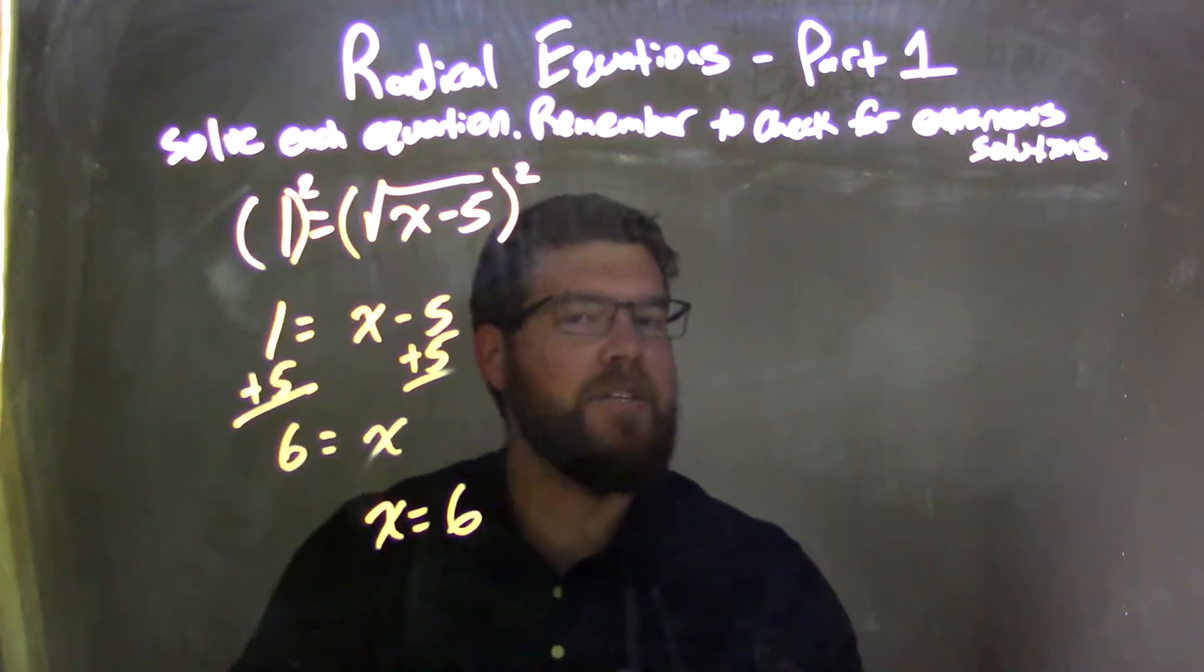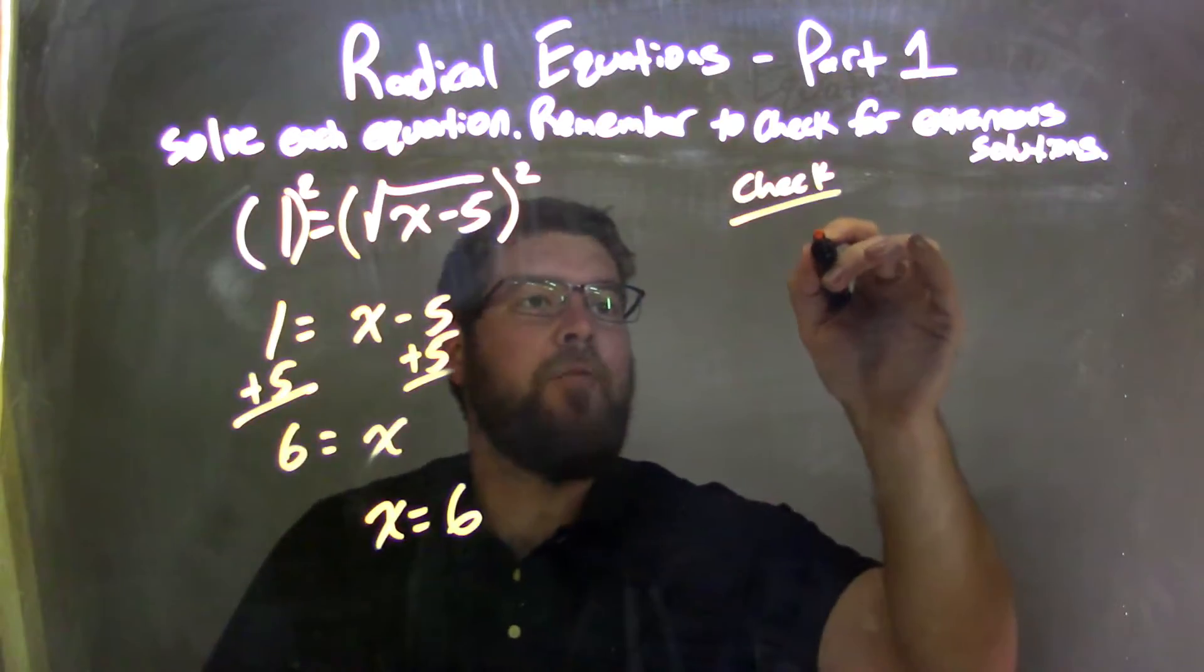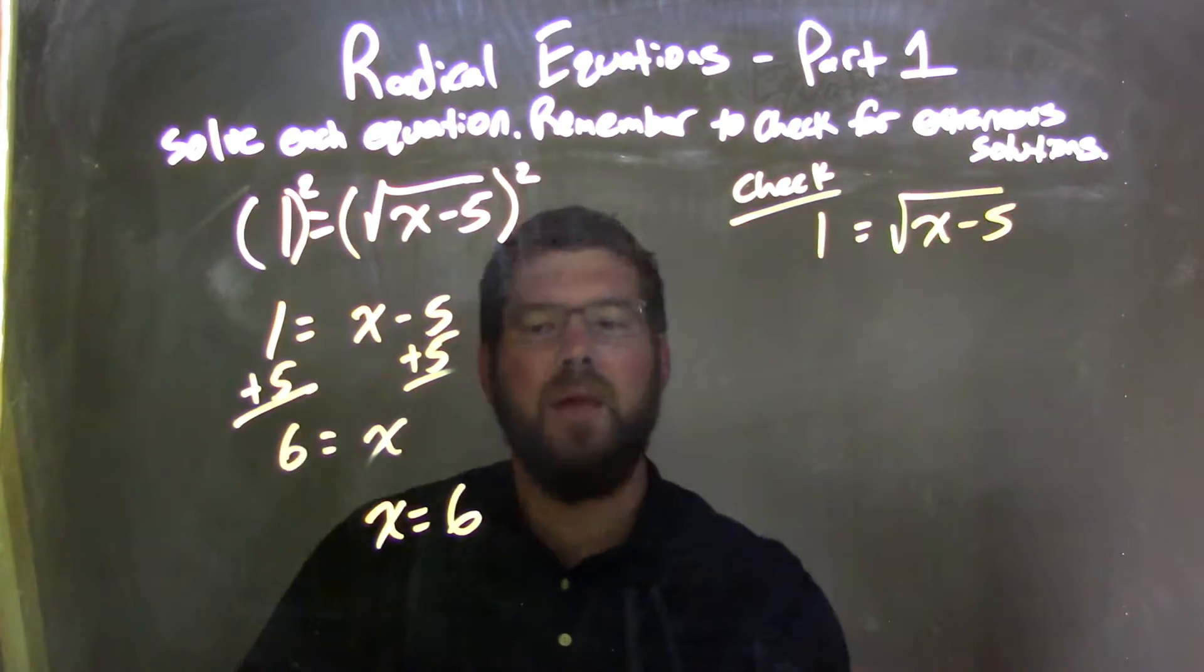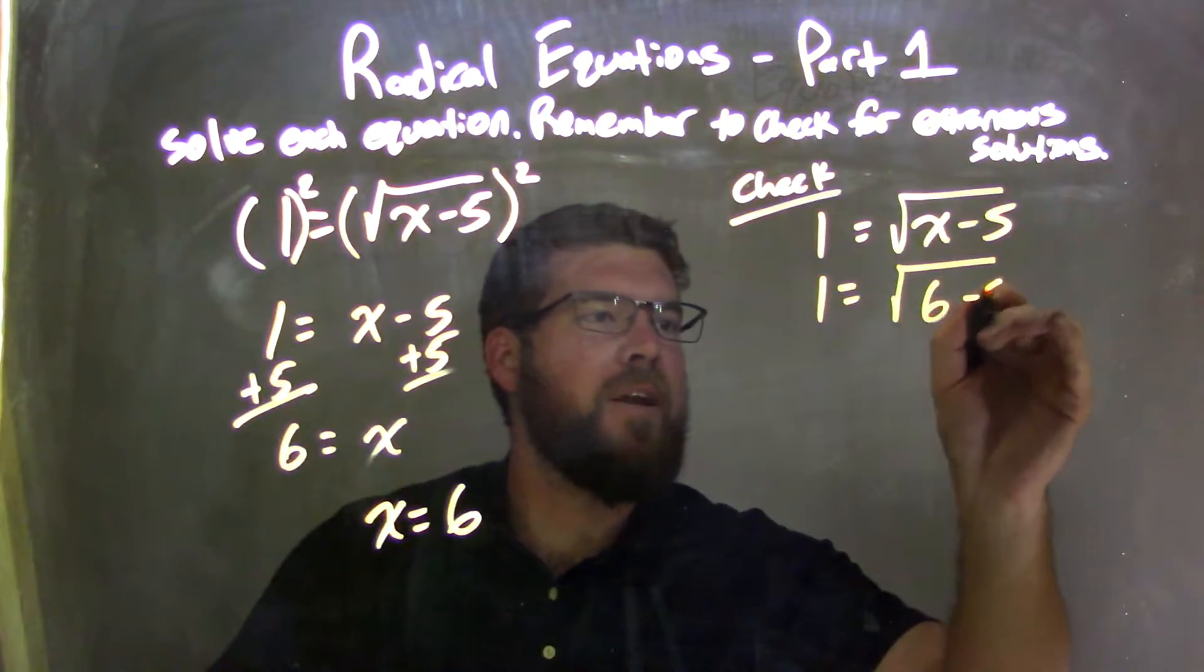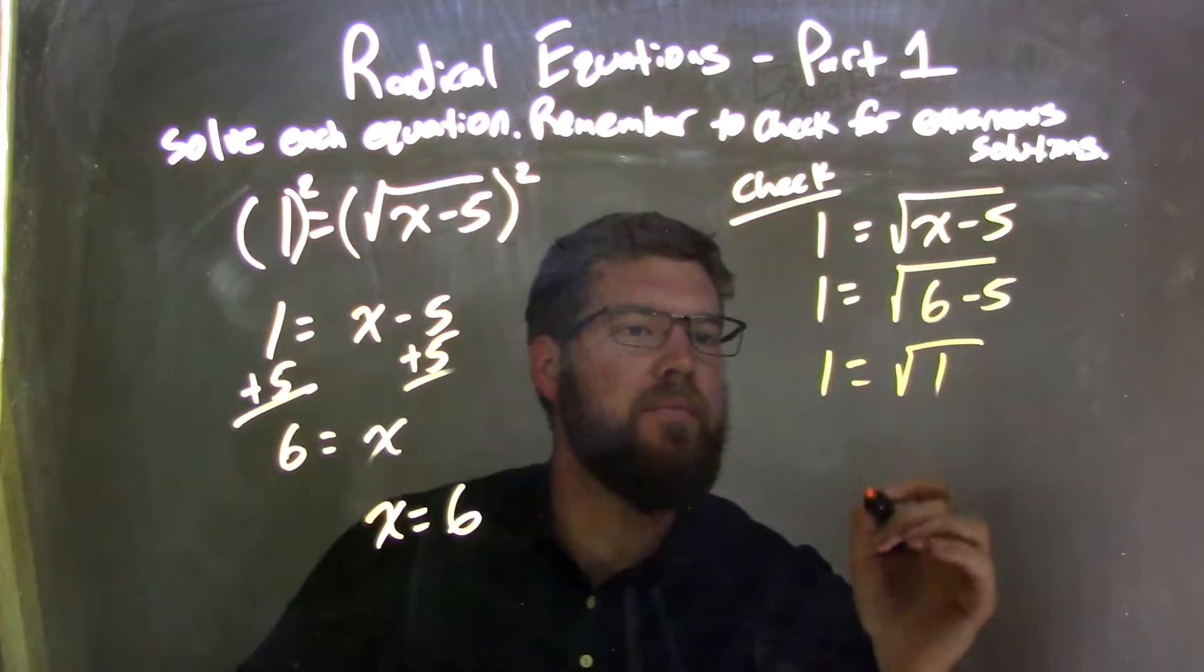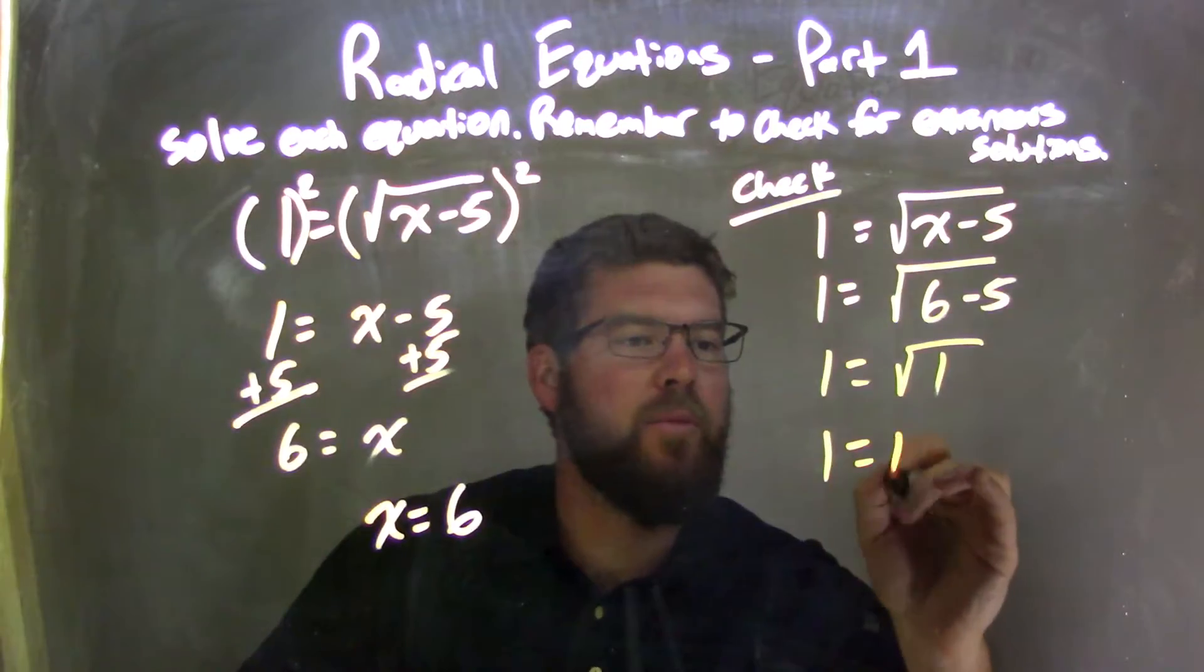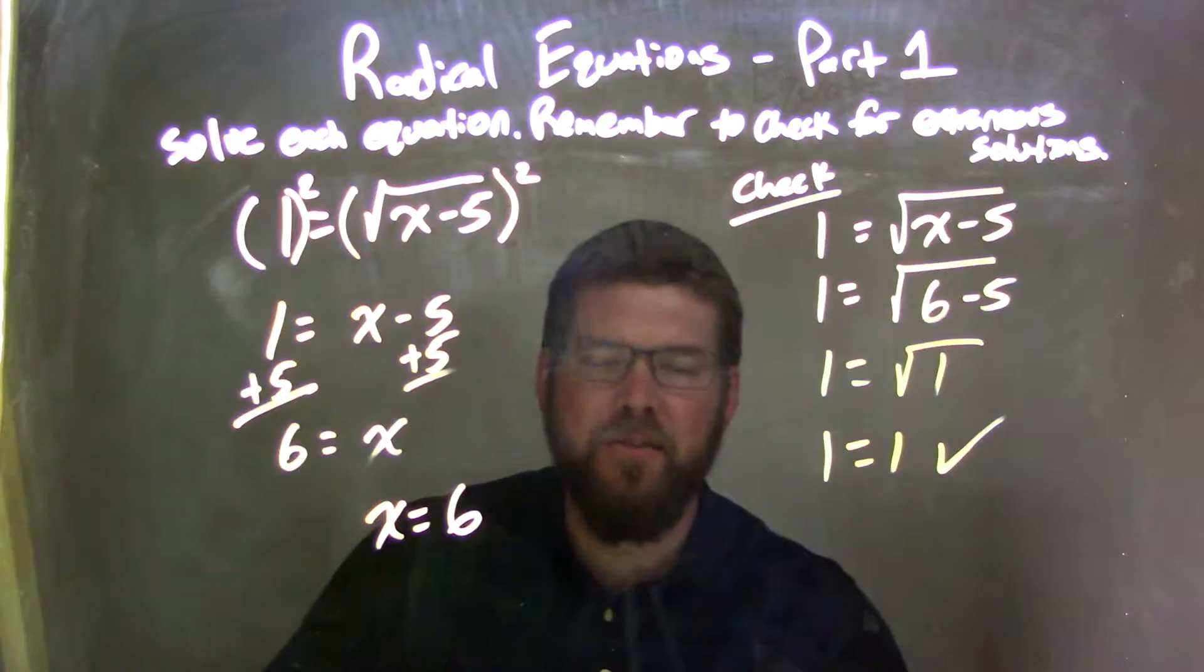Now I need to check that. I rewrite my equation: 1 equals the square root of x minus 5. I'm going to plug 6 in, so I have 1 equals the square root of 6 minus 5. 6 minus 5 is just 1. Square root of 1 is just 1, so I have 1 equals 1. Left and right hand sides are equal, so x equals 6 is my final answer.